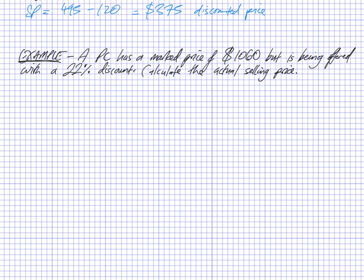So a PC has a marked price of $1,060, but it's being offered with a 22% discount. Calculate the actual selling price. So the formula is SP is equal to marked price minus discount. The only problem is I don't know what the discount is right now. I only know that it's 22%.